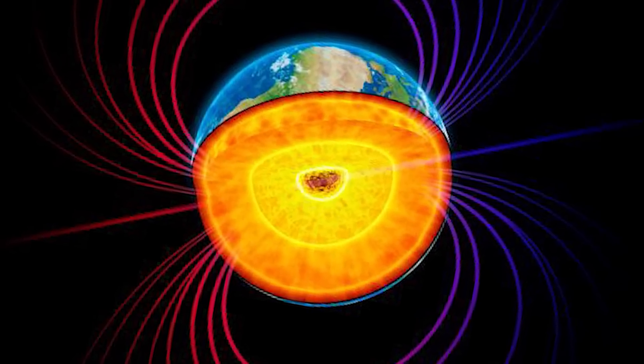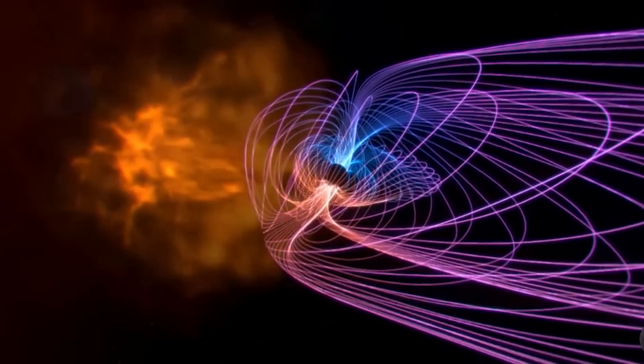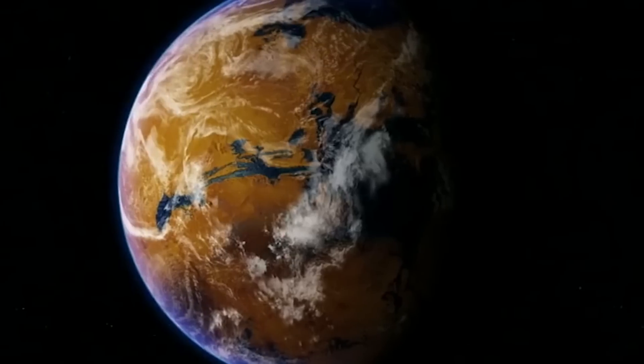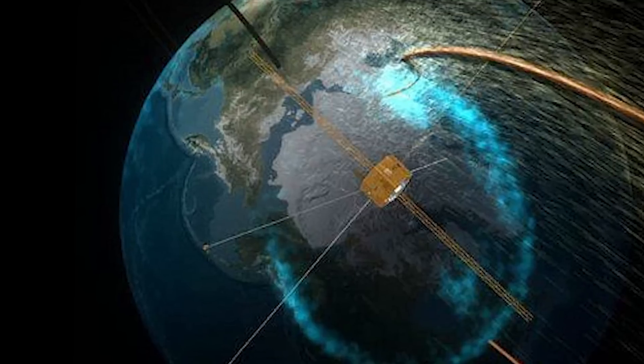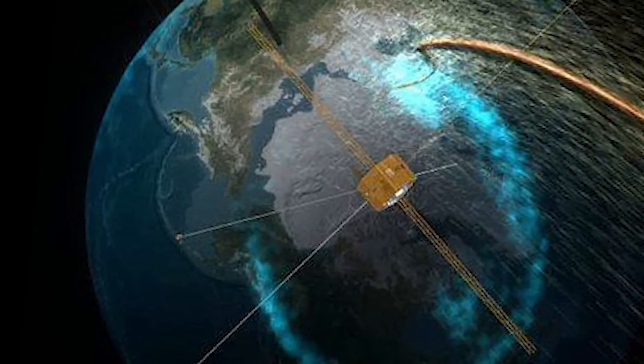While cracks in the Earth's magnetic field are common, experts say there's no need to worry because this field acts as a shield protecting us from solar storms. These fissures usually open and close quickly, but recent cracks have shown that they can remain open for several hours at a time.